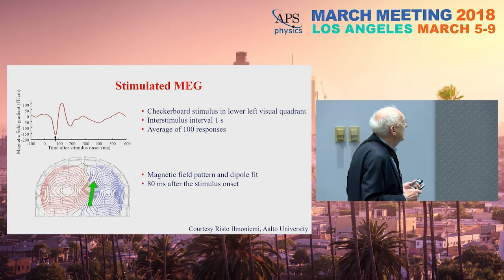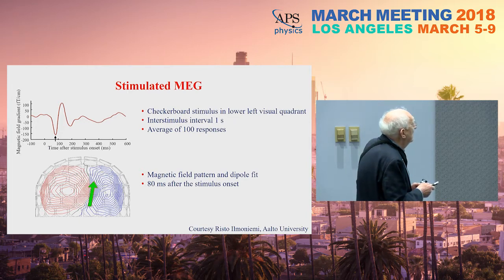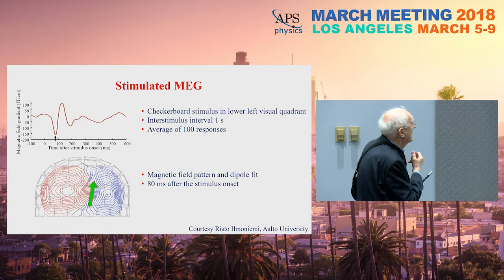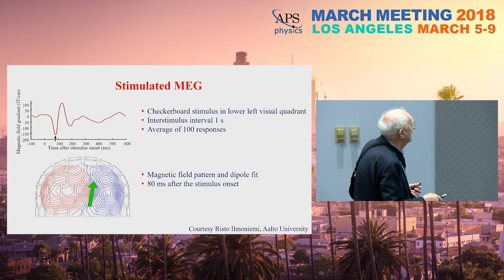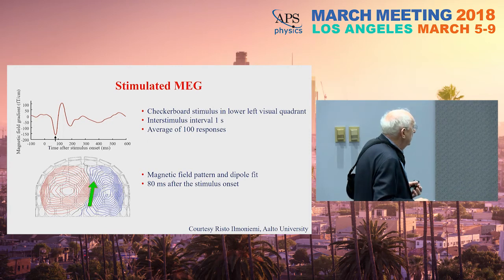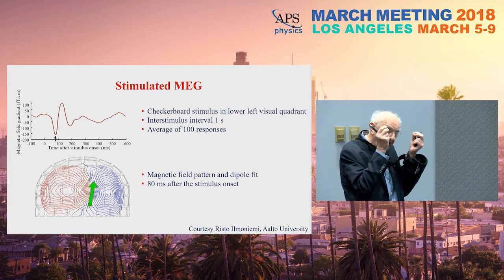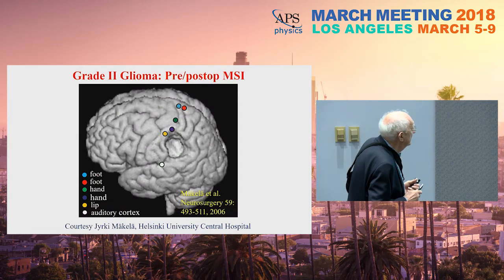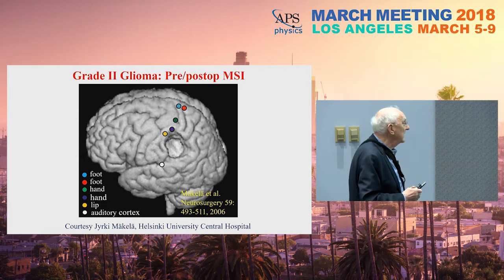Let me give one example of stimulated magnetoencephalography. A checkerboard was flashed into the left visual quadrant of the subject every second. After 100 averages from a single SQUID channel, you get a very clean signal as a function of time. Taking data from all SQUID channels generates a magnetic field pattern resembling a dipole, allowing you to fit and determine precisely where in the brain the signal arose.